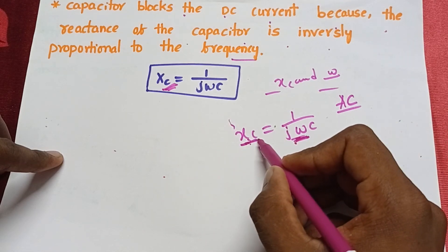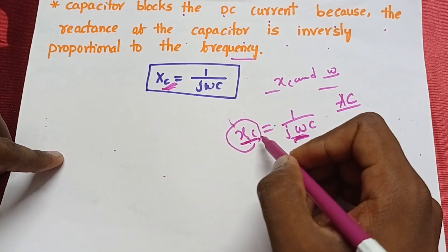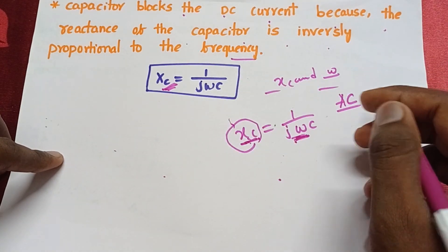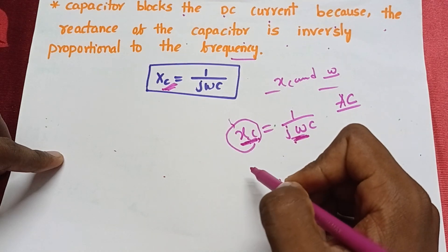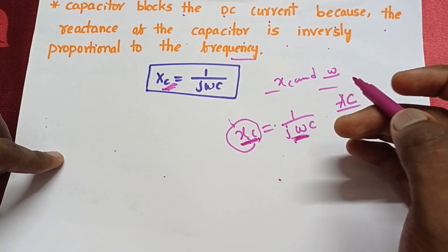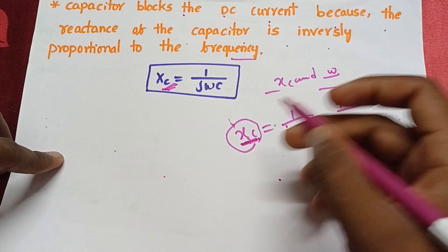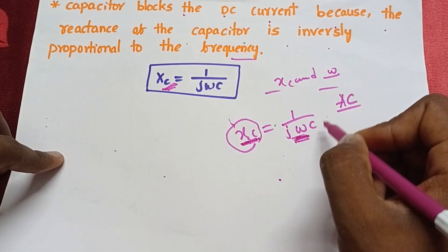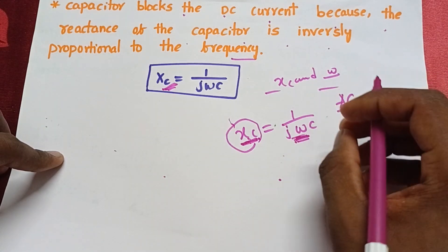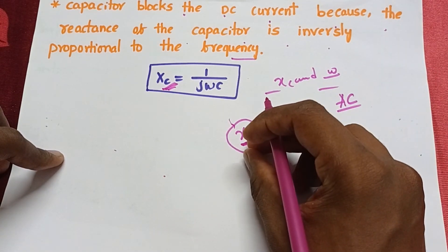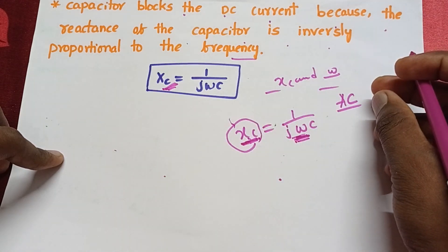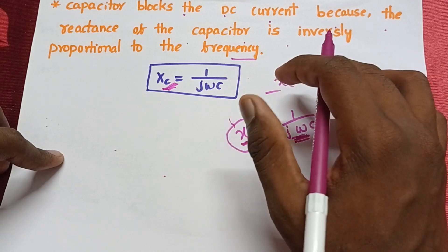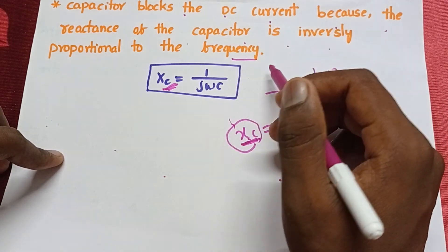Whenever the frequency increases, the reactance decreases. Whenever the reactance decreases, automatically the current flows through the capacitor. When reactance decreases, it means frequency has increased. Automatically, current flows through the capacitor. This is how the capacitor allows the AC current and blocks the DC current.